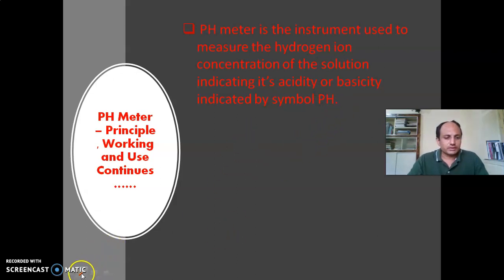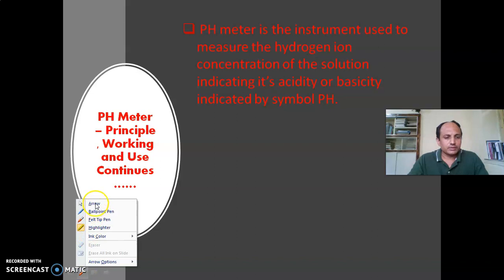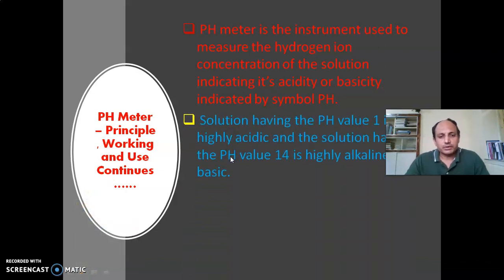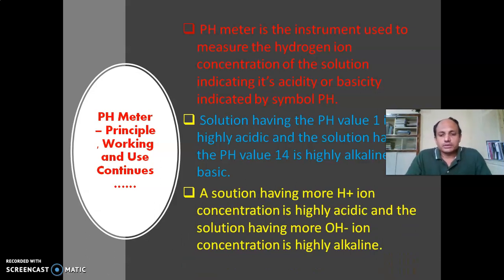The solution having a pH value of 1 is called an acidic solution, or generally it is highly acidic in nature. And the solution which has a pH value of 14 is highly alkaline or highly basic. Solutions having more H⁺ ion concentration are highly acidic, and solutions which have more OH⁻ ions are highly basic or highly alkaline.